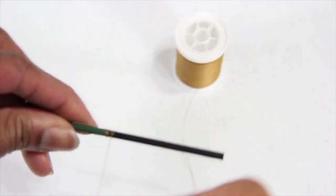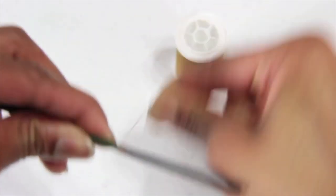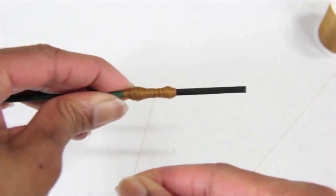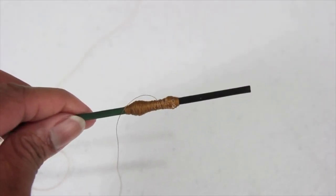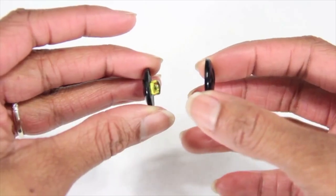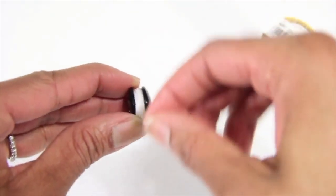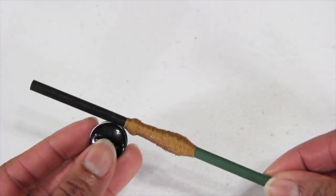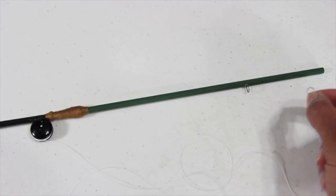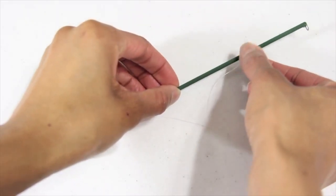I wrap the wooden dowel with thread to make the grip. I use glue to secure the thread and trim off the excess. I glue a bead between two buttons, wrap it with thread, glue it to the wooden dowel, glue two jump rings going down the wooden dowel, and run the thread through the jump rings.